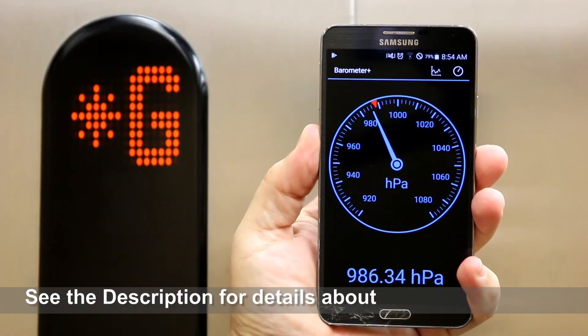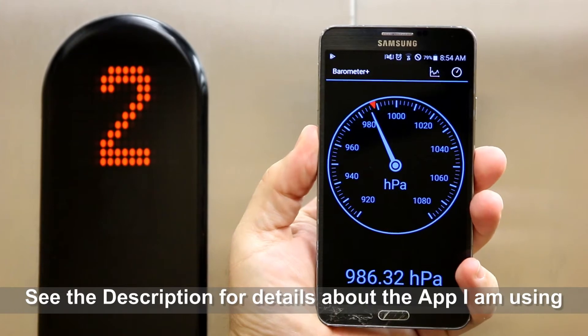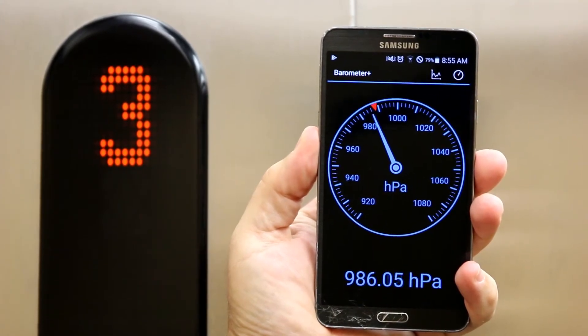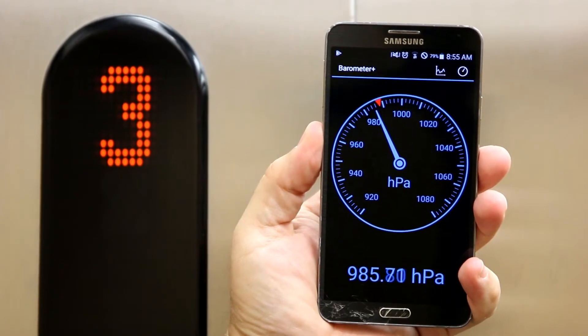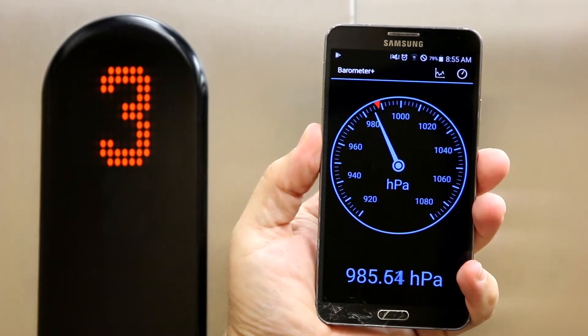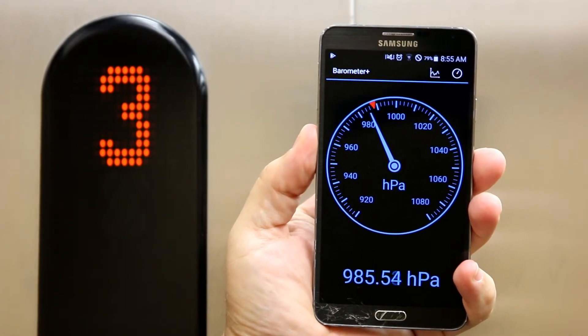Here on the ground floor, the pressure is roughly 986.35 hectopascals. But as we're rising, watch how the pressure drops. 986.0, 985.8. Continuing to drop when we're just arriving at the third floor, the pressure reaches a low of 985.5.